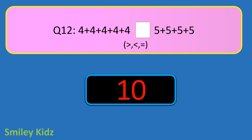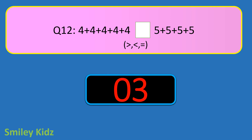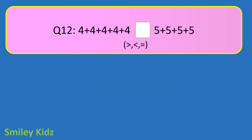Question number 12. 4 plus 4 plus 4 plus 4 plus 4 plus 4 blank 5 plus 5 plus 5 plus 5. Put the correct sign. And your time is up. The right answer is equal to. 4 plus 4 plus 4 plus 4 plus 4 plus 4 is equal to 20, and 5 plus 5 plus 5 plus 5 is equal to 20. So 20 is equal to 20.